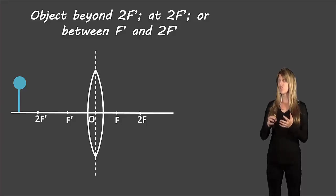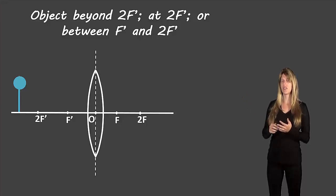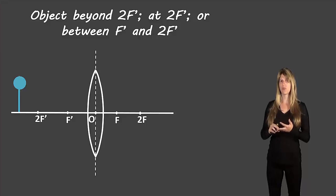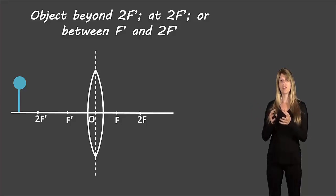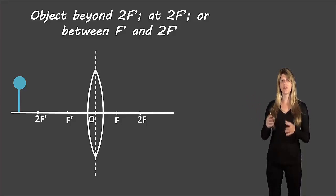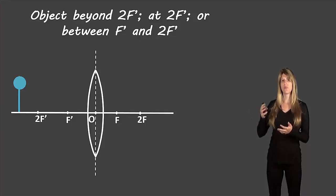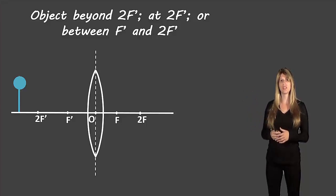The first three — object beyond 2f prime, at 2f prime, or between f prime and 2f prime — all have the exact same rules. We're going to group them together and I'm just going to do one example that covers all three. If you have an example on your worksheet that covers a different one, you'll still be using these exact same rules.